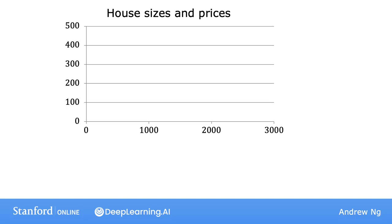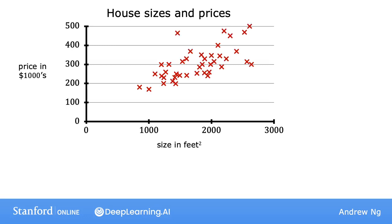Here we have a graph where the horizontal axis is the size of the house in square feet, and the vertical axis is the price of the house in thousands of dollars. Let's go ahead and plot the data points for various houses in the dataset. Here at each data point, each of these little crosses is a house with a size and a price that it most recently was sold for.